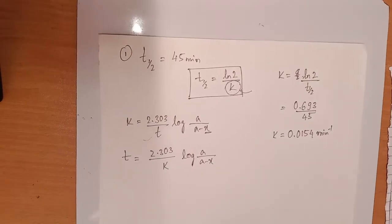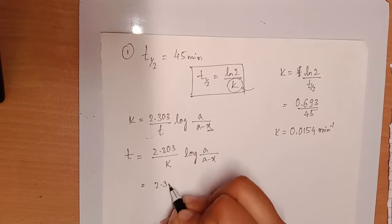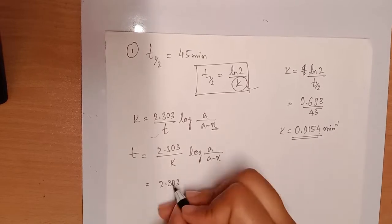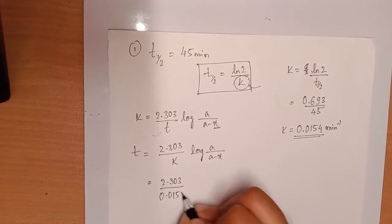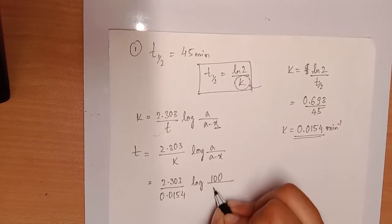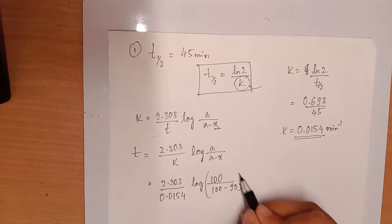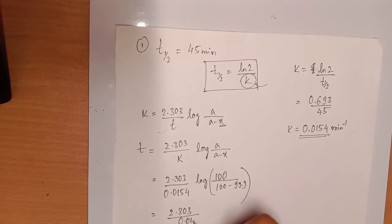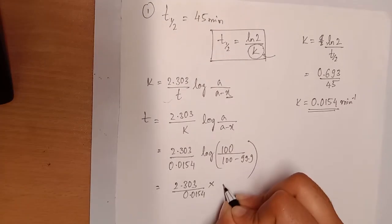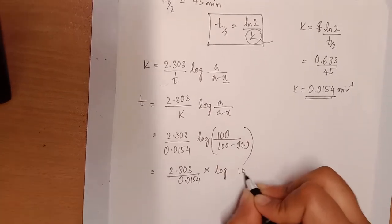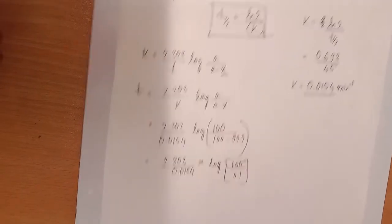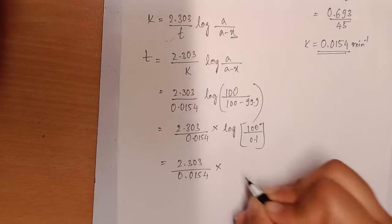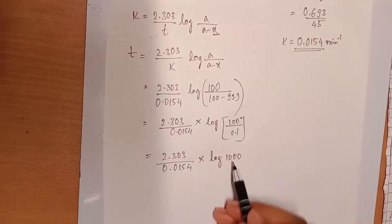Since we don't know T, we use the K value we found earlier. K is 0.0154. So: T equals 2.303 divided by K, into log of A divided by (A minus X), which is log of 100 divided by (100 minus 99.9), giving log of 100 divided by 0.1, which is log 1000. Log 1000 equals 3, so T equals 2.303 divided by 0.0154 into 3.